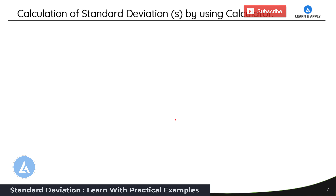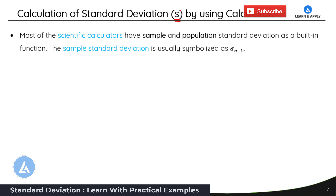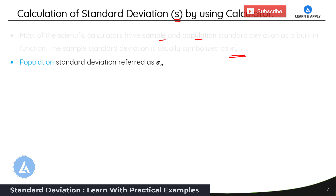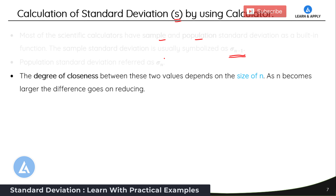When calculating standard deviation using a calculator, note that sample standard deviation is indicated by S, and population standard deviation by sigma. Most scientific calculators have both as built-in functions. On a scientific calculator, sample standard deviation is usually symbolized as sigma n minus 1, while population standard deviation is referred to as sigma n. As n becomes larger and larger, the difference between the two values goes on reducing, because as sample size increases we approach the true mean of the population.